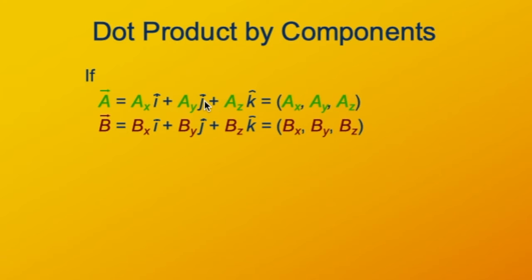in the y direction, plus the z component a sub z times the unit vector k hat in the z direction. We can refer to it as an ordered triple, or an ordered pair if working in two dimensions: the x component, the y component, and the z component.